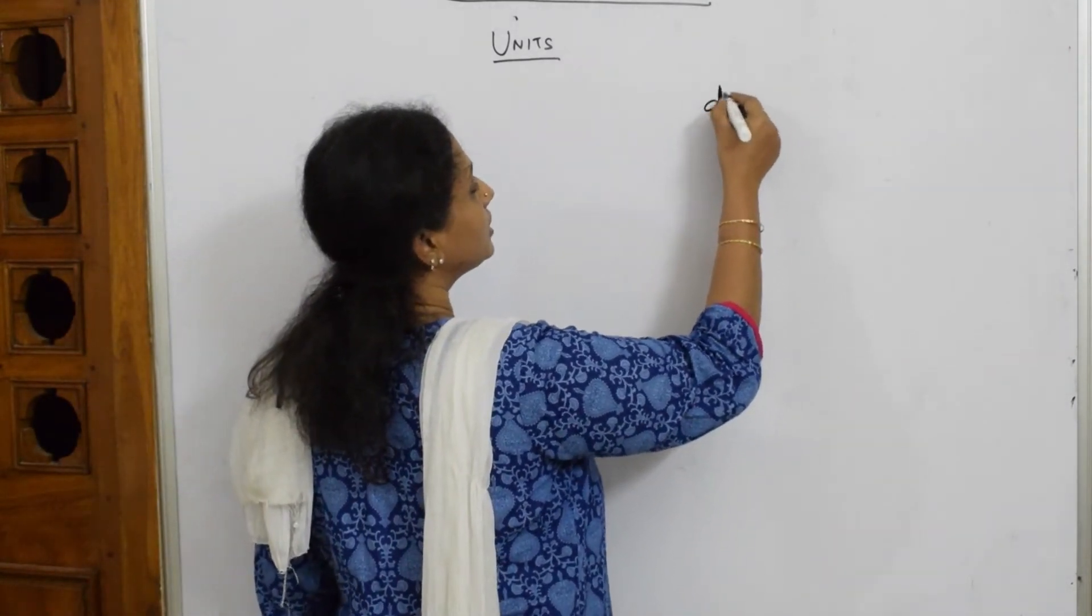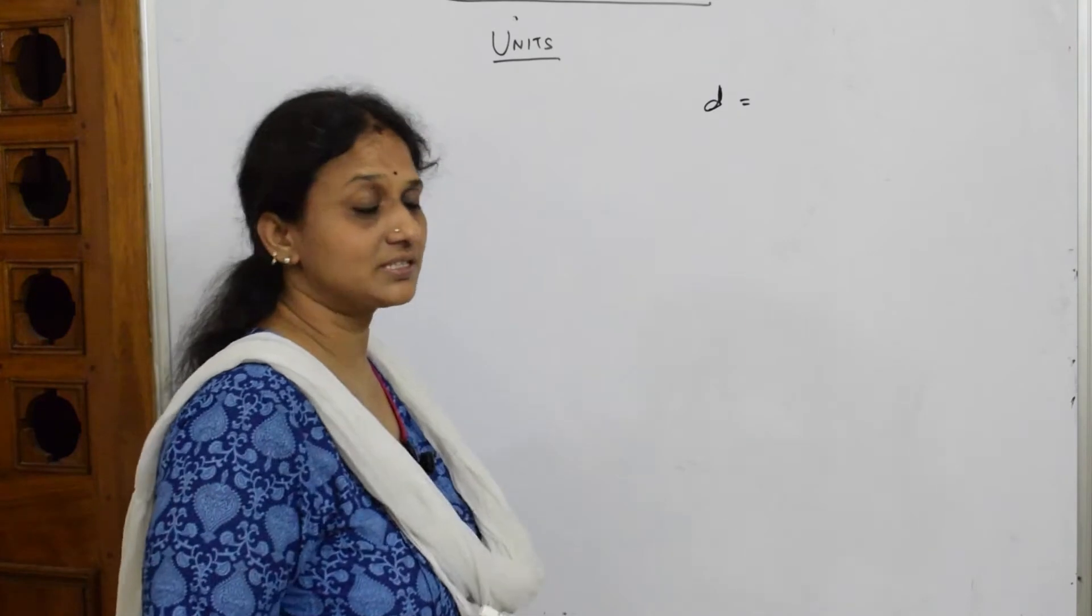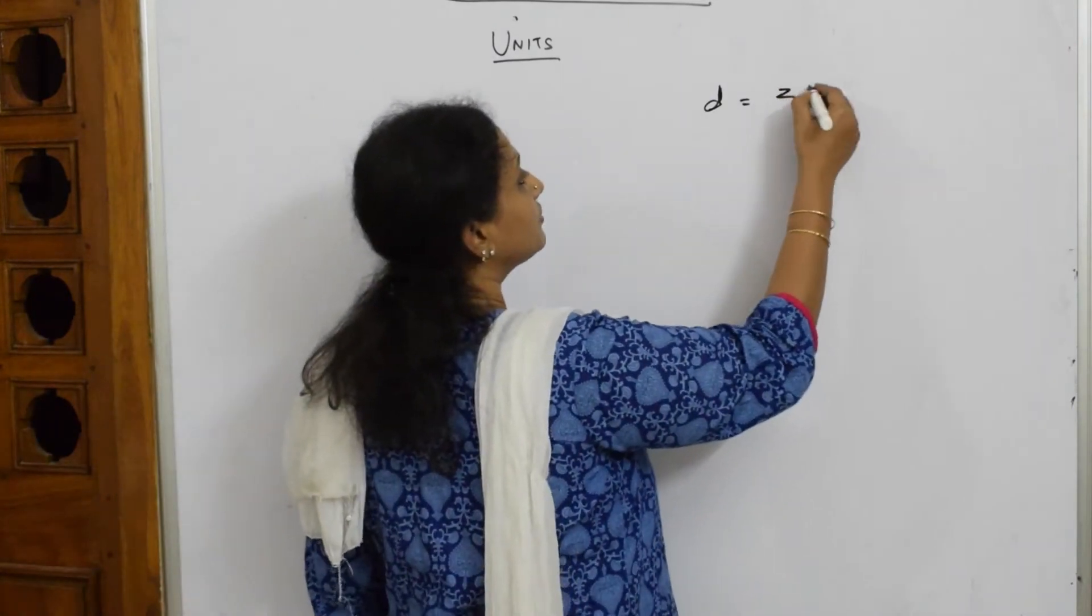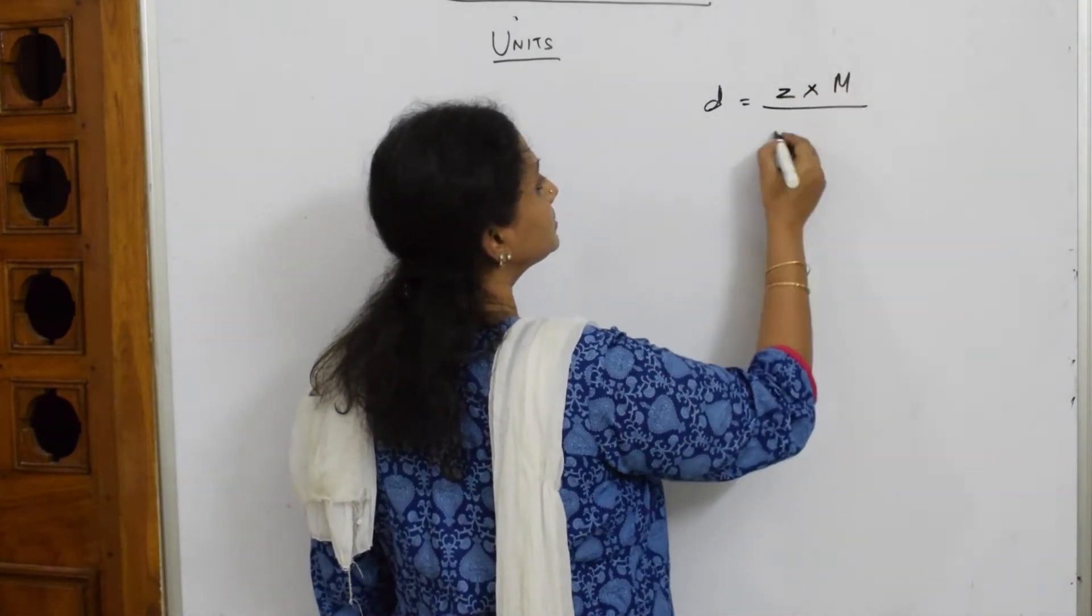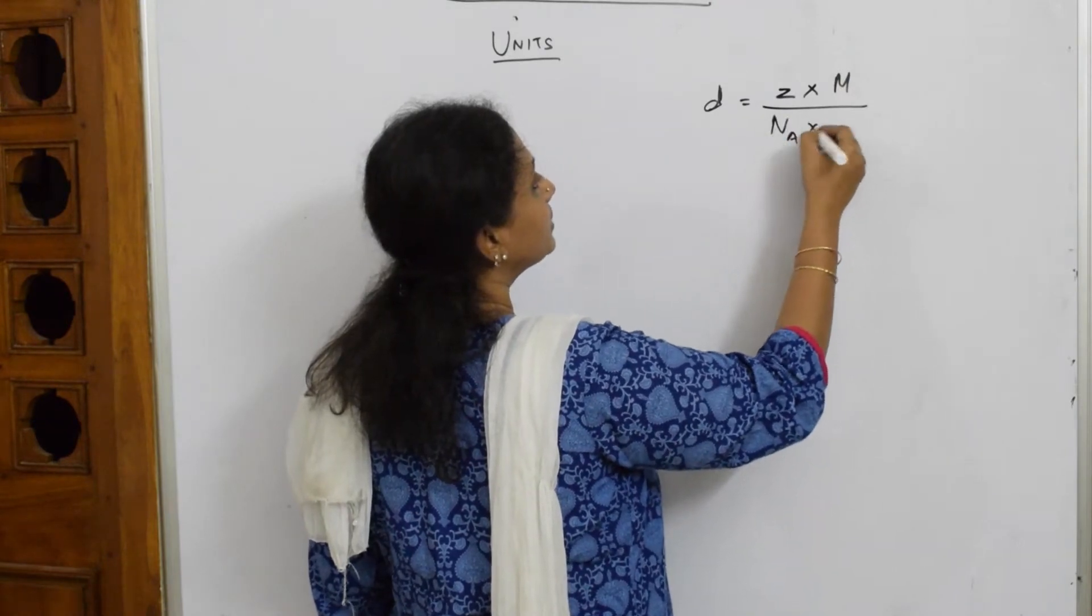Density is equal to the formula which we are going to use in solid state. The number of atoms Z, into the molecular mass M, by Avogadro's number NA into A cube.